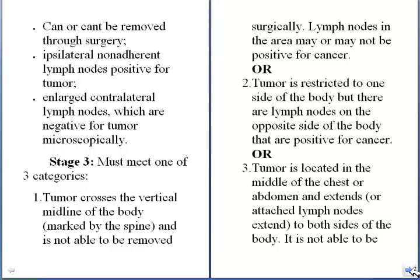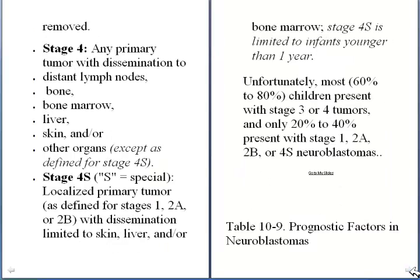That is, the contralateral lymph nodes are positive for cancer. Or the tumor is located in the middle of the chest or abdomen and extends — or attached lymph nodes extend — to both sides of the body and cannot be removed.